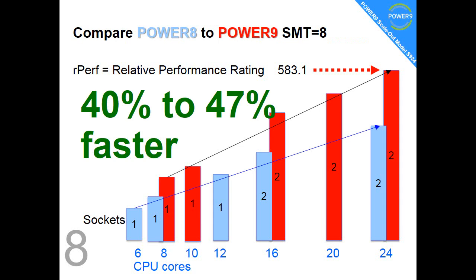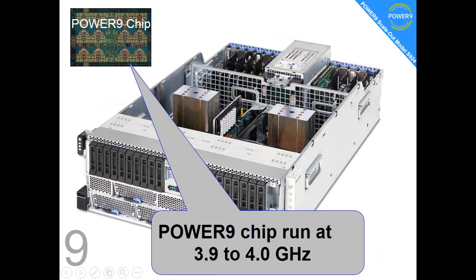To give you a number you can probably remember: comparing Power 8 and Power 9, our jump in performance is between 40 and 47 percent. Some of our competitors releasing a new generation of their computers are happy if they get above five percent extra boost, so this is quite a significant jump from IBM.